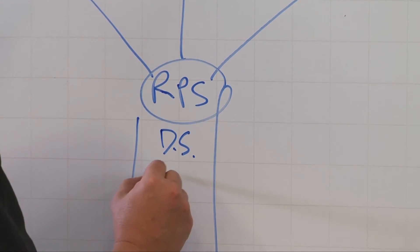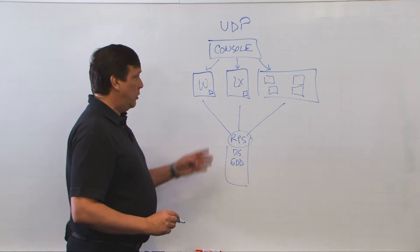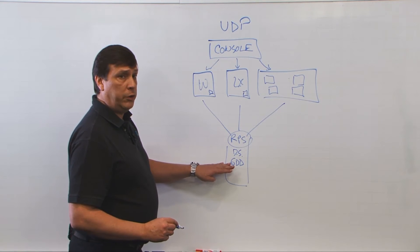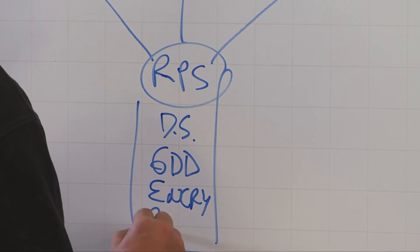We also do global deduplication here. So all the data that's being sent is also being deduplicated here across all nodes. It also supports encryption and compression.